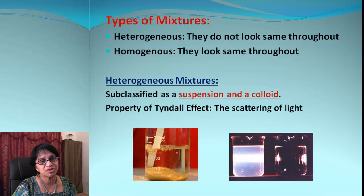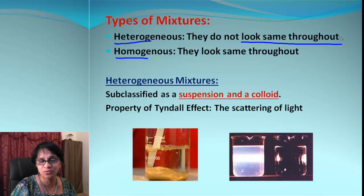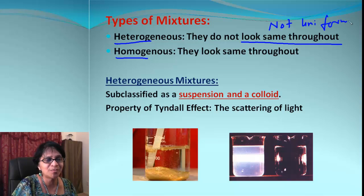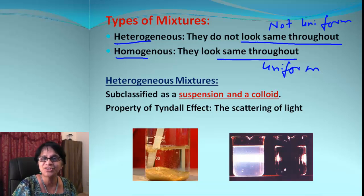Now there are two types of mixtures, as we discussed. One is called hetero, and the other is called homo. The way we remember is hetero: they do not look the same throughout, or they are not uniform. Whereas when we talk about homo, they look the same throughout, or they are uniform in nature.